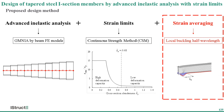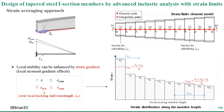The third part of the proposed design method is the strain averaging approach. The local stability of the cross-section can be enhanced by the presence of a strain gradient. Due to the strain gradient and the finite length of local buckling, the maximum moment along the length is higher than the typical design moment. To account for this beneficial effect, we consider the strain distribution along the length of the tapered member. When we use the CSM strain limit to determine the ultimate state of each cross-section along the member length, the strain checked against the corresponding CSM strain limit is not the maximum strain of one cross-section, but the average strain over the local buckling half-wavelength of that cross-section.